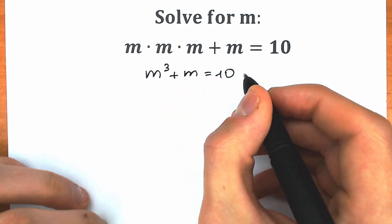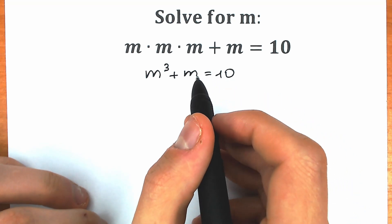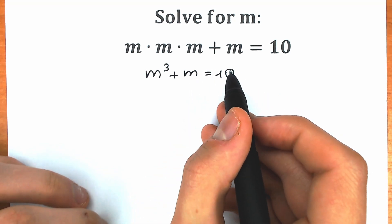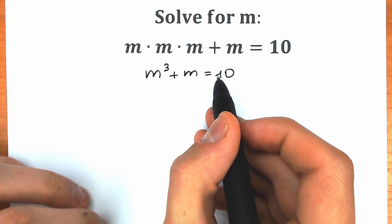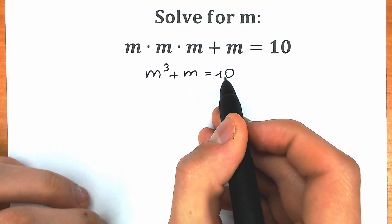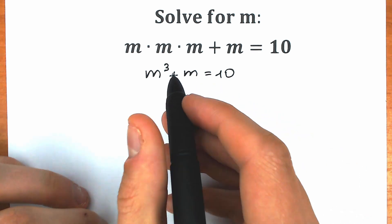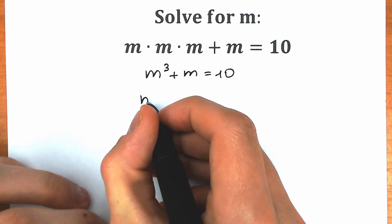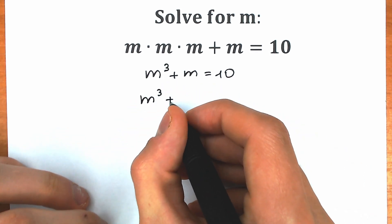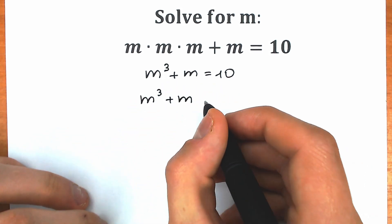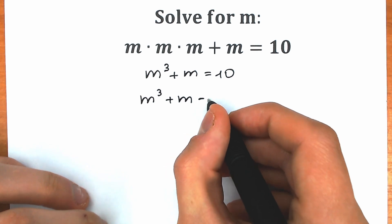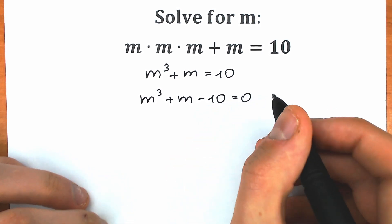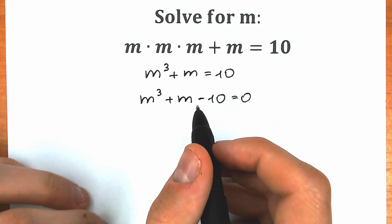Right now, when we have this type of expression, it's really great to create zero on the right side. Let's bring this 10 from the right side to the left side. So as a result we have m cubed plus m minus 10 equal to zero. This is our cubic equation.